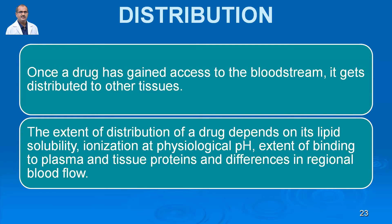You cannot make a drug act only on the central nervous system or the stomach — whatever the property of the drug, it has to reach many tissues: fat or adipose tissue, intestine, liver, and so on. The extent of distribution depends on its lipid solubility, ionization at physiological pH, extent of plasma protein binding, and tissue protein binding, which differ in different regions of the body.